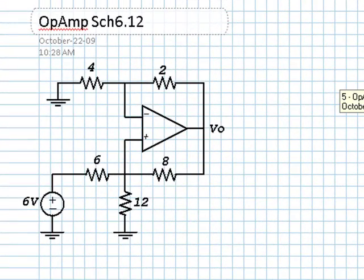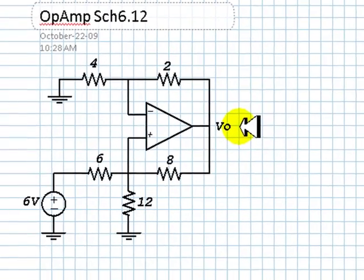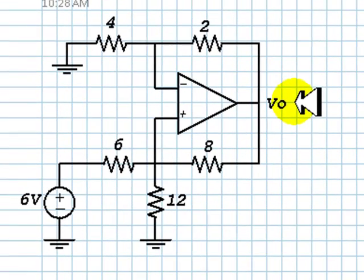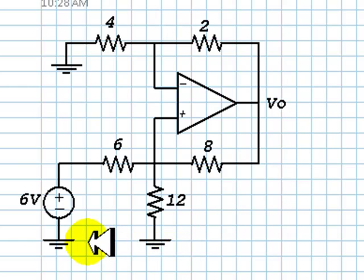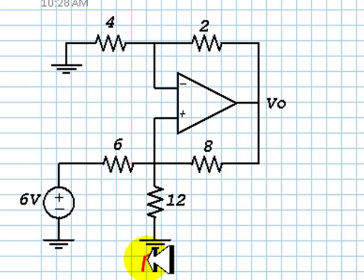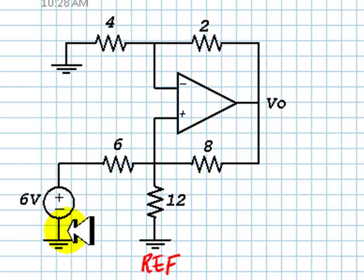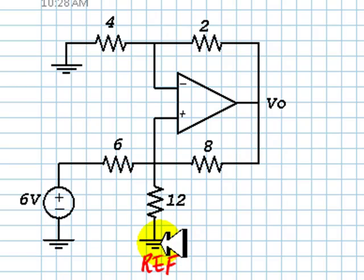This is our first numerical exercise. We need to compute V0, the output voltage with respect to the reference node that has been pre-chosen for us. This node, and this one, and that one — they are the same node. Let me call that the reference node. That is shorthand for electronics engineers to represent the reference node.